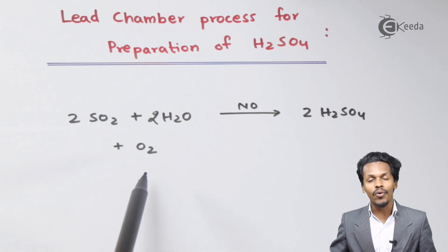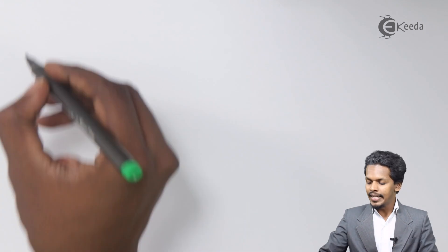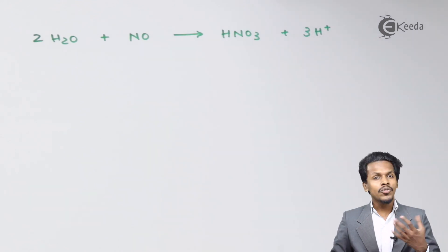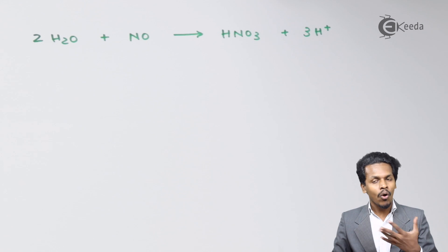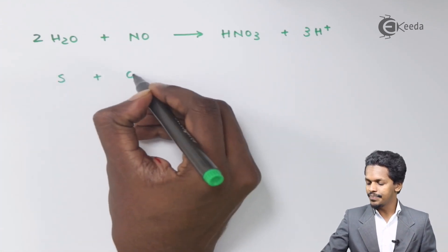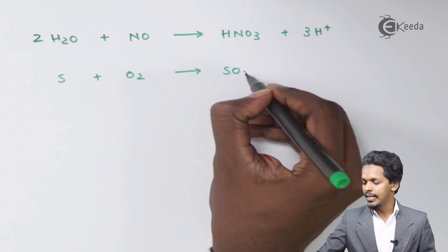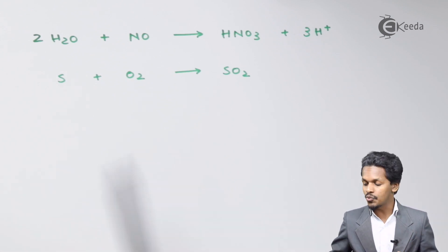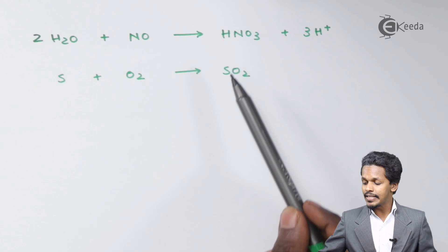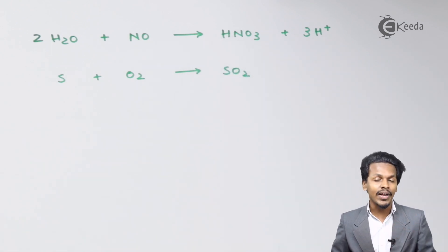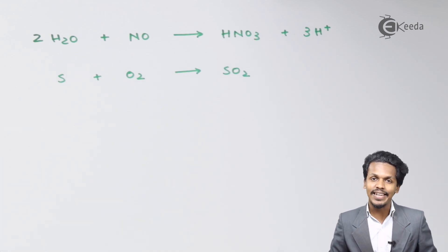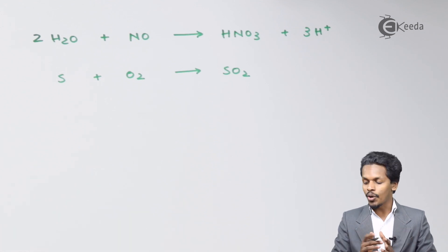Talking about the steps involved: sulfur can react with oxygen so as to form sulfur dioxide, SO₂. This is the main component. Instead of using a pre-existing source, we can also react sulfur directly with oxygen to obtain SO₂. This SO₂ and HNO₃ play a very vital role — they help in the preparation of SO₃, which in turn is helpful in the preparation of H₂SO₄.